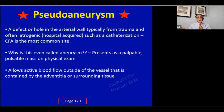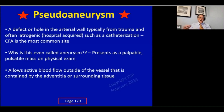Basically, it's a defect or hole in the arterial wall, and this is commonly iatrogenic - hospital-acquired - such as following cardiac catheterization. Because of that, the common femoral artery is usually the most common site. Basically, it allows active blood flow outside the vessel that gets contained by the adventitia or more likely the surrounding tissues.